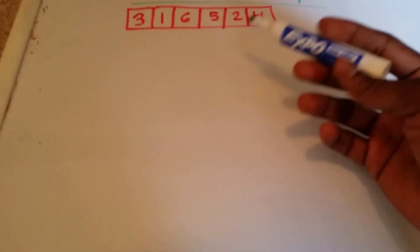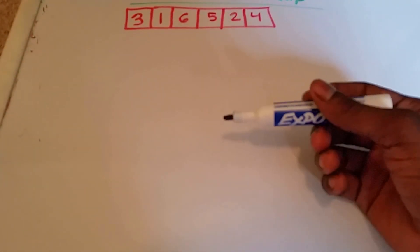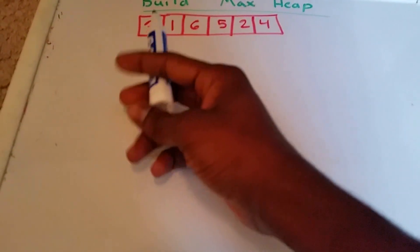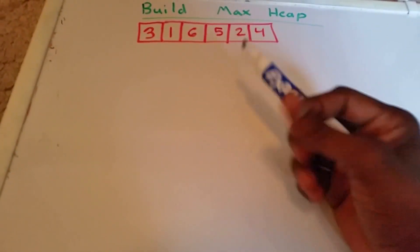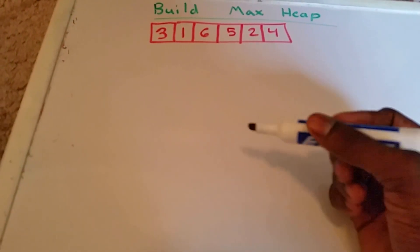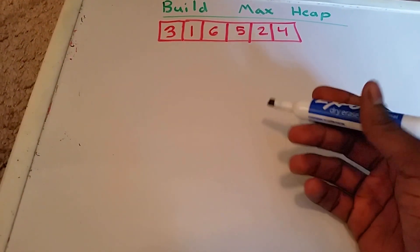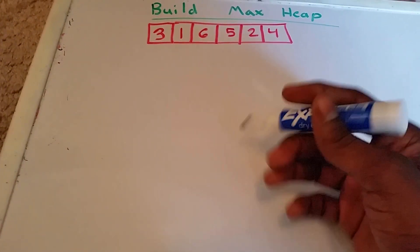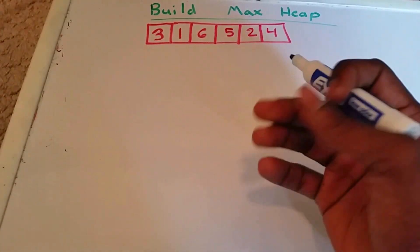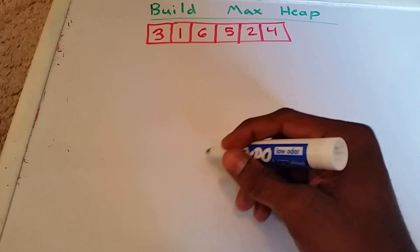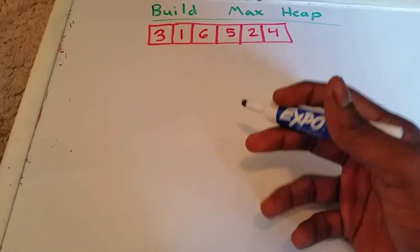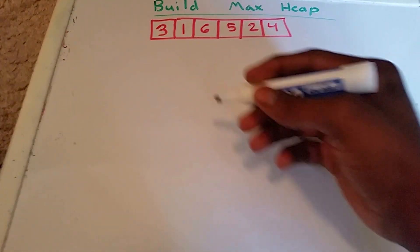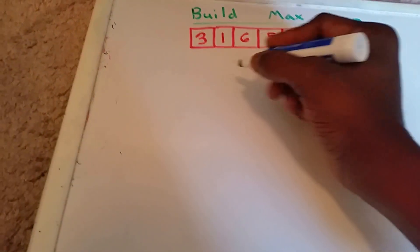Hey guys, in this video we're going to build a max heap. The other heap that we could also create is a min heap. So here we have the array 3, 1, 6, 5, 2, and 4. And we're going to use the Williams method or technique to build this heap. Another way to build a heap is to take the array, put it in a binary tree, and then do a few operations such as heapifying the binary tree to make it a heap. So let's go ahead and get started.